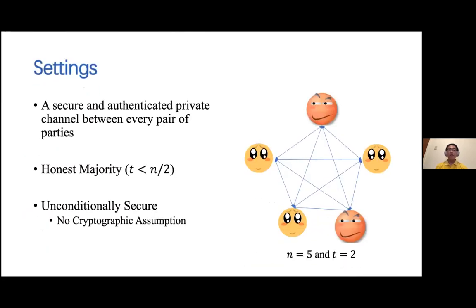We assume that there is a secure and authenticated private channel between every pair of parties so that they can communicate with each other and the messages will not be leaked to a third party. We will use n to denote the number of parties and t to denote the number of corrupted parties. In this graph, we have five parties and two of them are corrupted. Note that in unconditional security, the computation power of the adversary is unbounded, meaning we cannot rely on any cryptographic assumption since it is based on the hardness of computation.